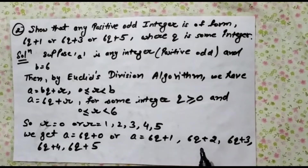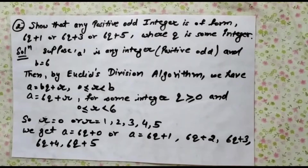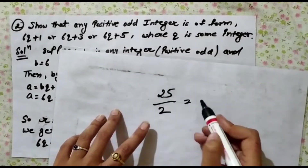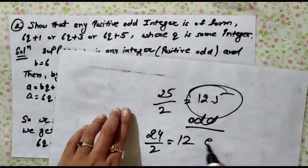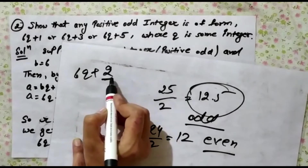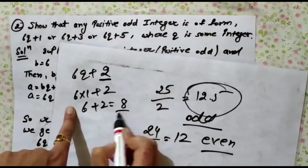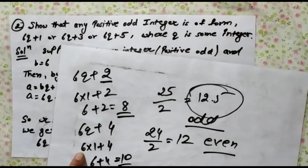We know that any number of the form 6q — for example, the table of 6: 6, 12, 18, 24 — all those numbers are divisible by 2. To check whether a number is even or odd, we divide by 2. For example, 6 times 1 plus 2 gives 8, which is even. And 6 times 1 plus 4 gives 10, which is also even.